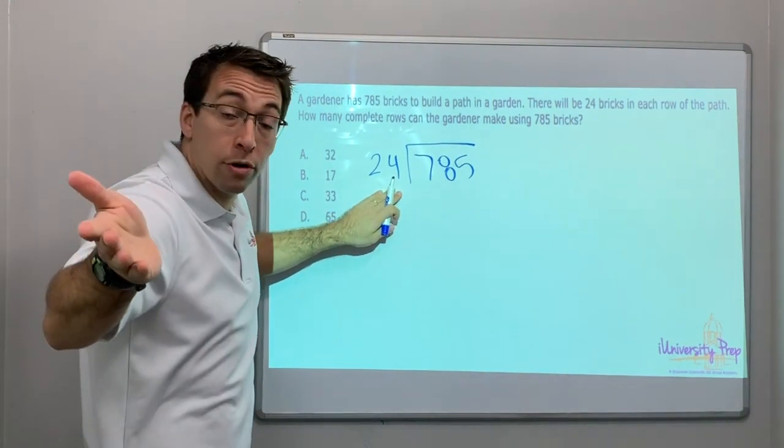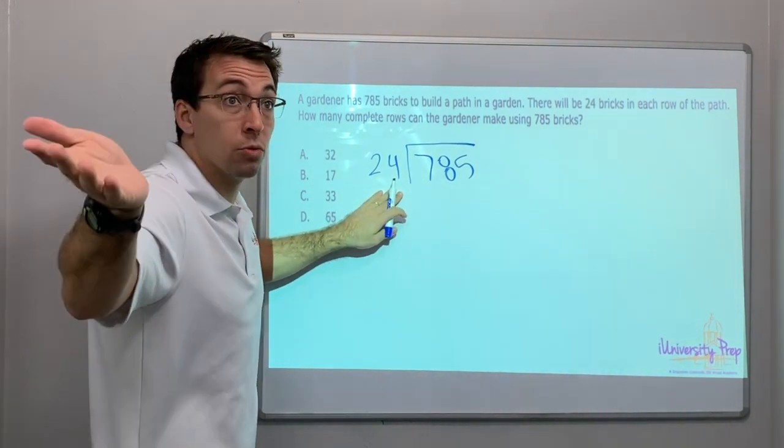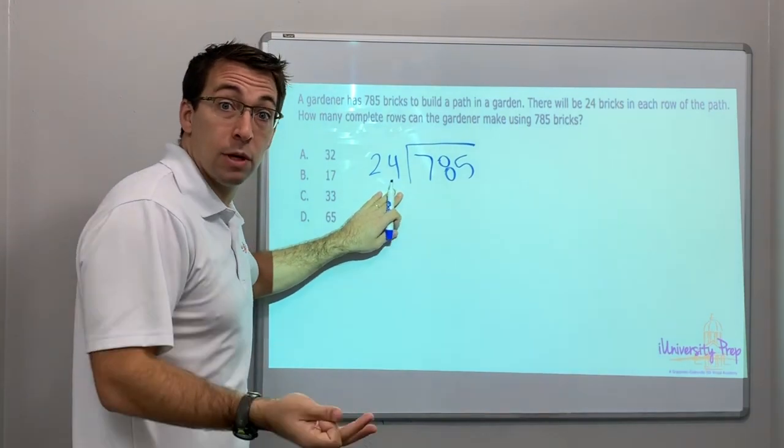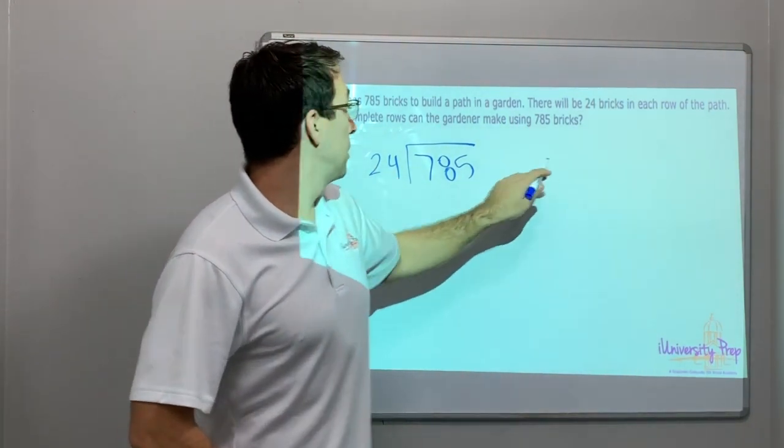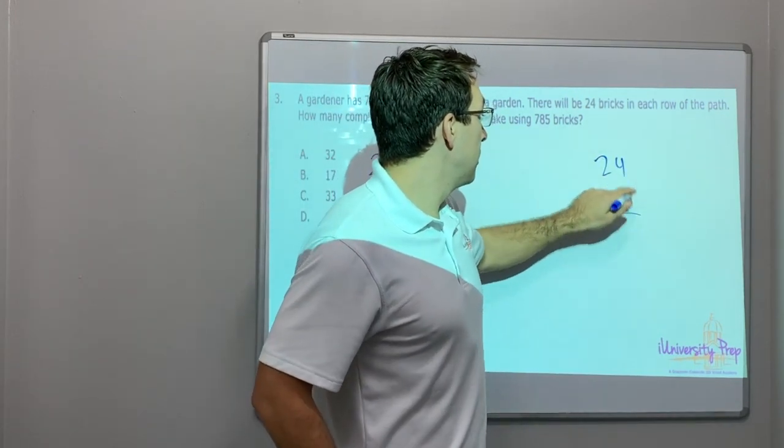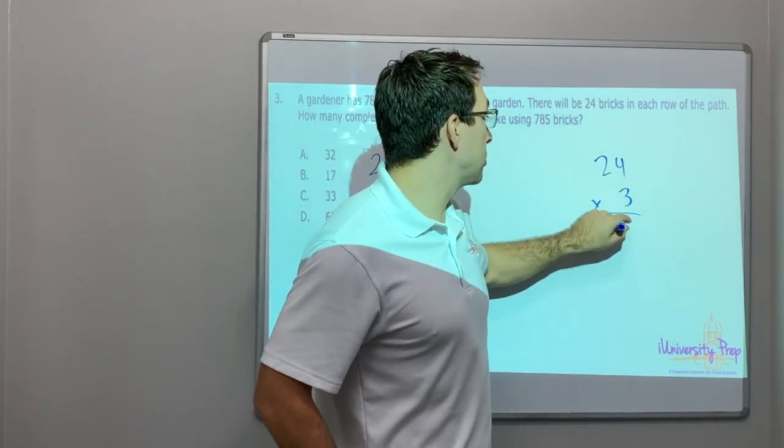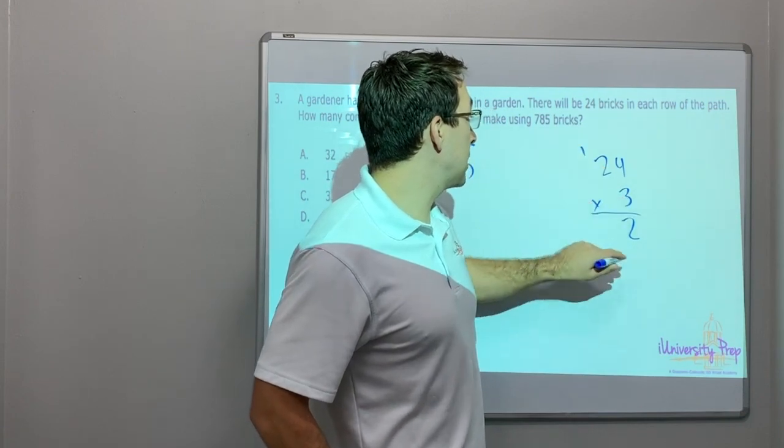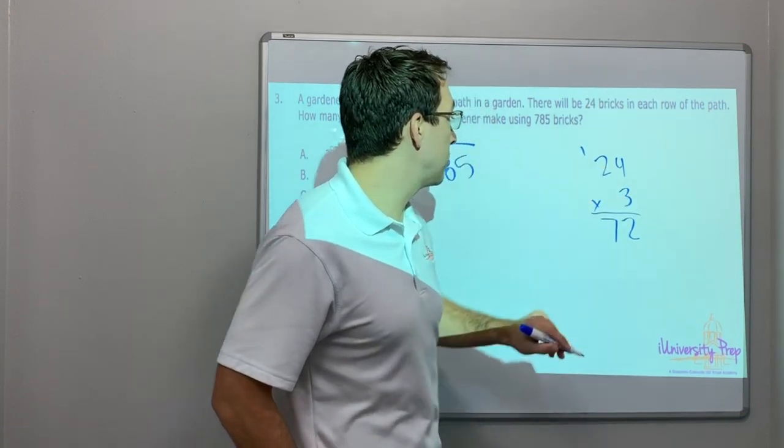24. Well, think about it. A quarter is 25. A quarter times three is 75 cents. If you have 3 quarters, you have 75 cents. So 24 times 3 is going to be close to 78. 24 times 3. 12, 3 times 4 is 12, carry 6, 7, 72.